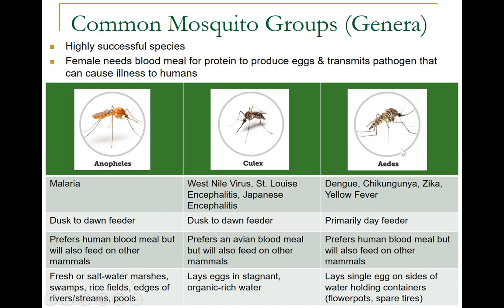This species has been extremely successful. The female needs a blood meal for producing eggs — it needs protein from blood — and at that time the female becomes extremely aggressive and seeks human blood. The male of the same species typically gets its nutrition from flowers and nectar, whereas the female during reproduction needs a good protein diet, which is why it needs a blood meal.